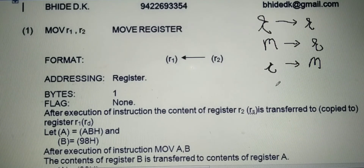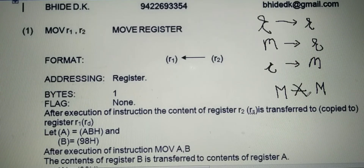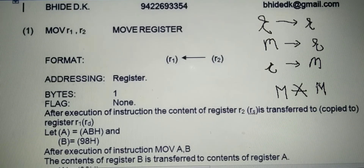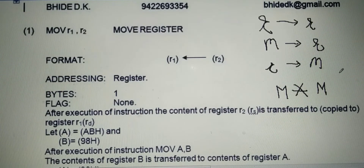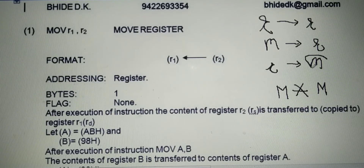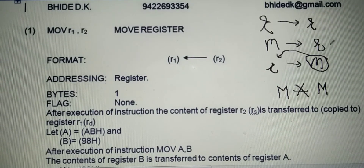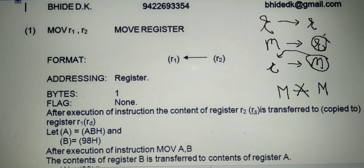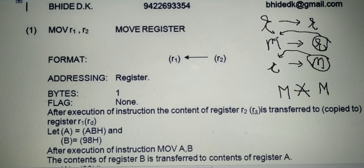Direct transfer of data from one memory location to another memory location in the 8085 is not allowed — it is not possible. However, you can transfer data from one memory location to another in the following way: bring the data from the source memory location to any general purpose register, and from that general purpose register transfer the data to the destination memory location.